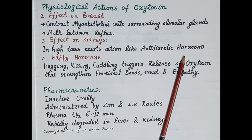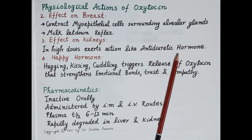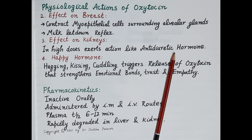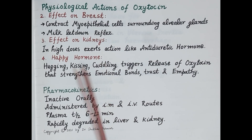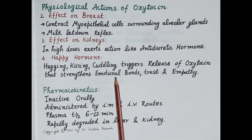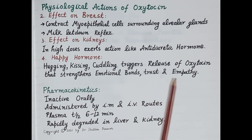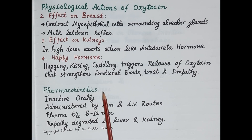In high doses, oxytocin exerts an antidiuretic hormone-like action, reducing urine volume and causing water retention, leading to water intoxication. Oxytocin is also called the 'happy hormone' — hugging, kissing, and cuddling trigger its release, which strengthens emotional bonds, trust, and empathy between individuals.